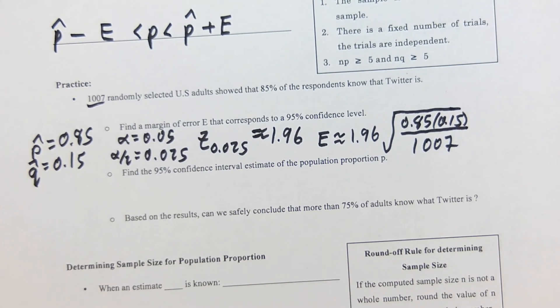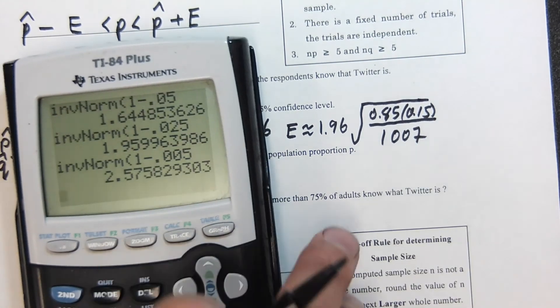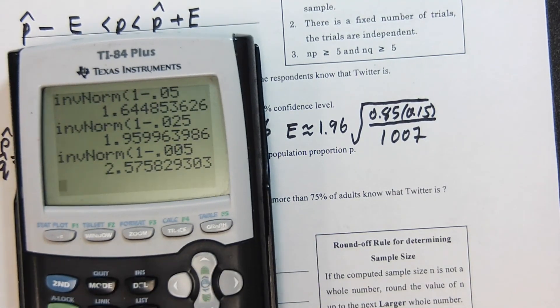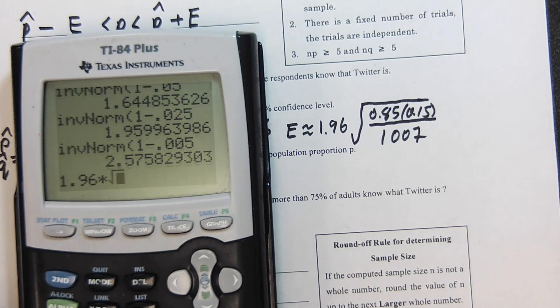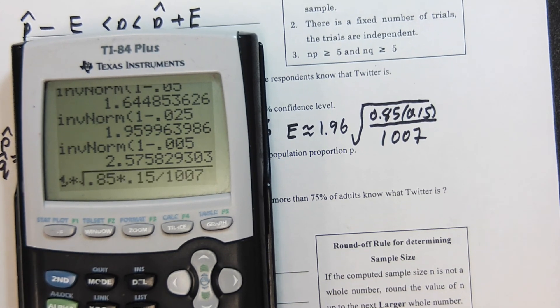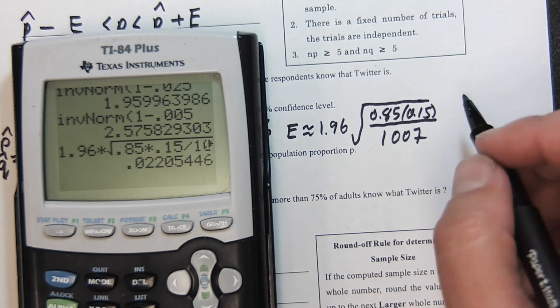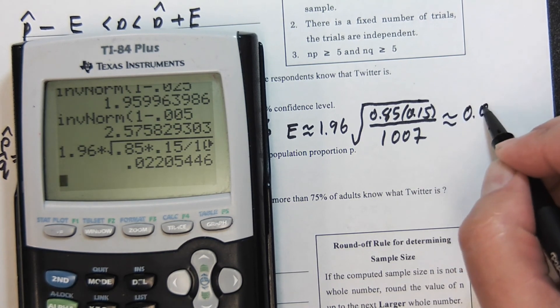As I put all of that into my calculator—1.96 times square root of 0.85 times 0.15 divided by 1007—that is going to give me my approximate error, 0.022.